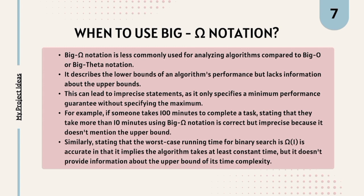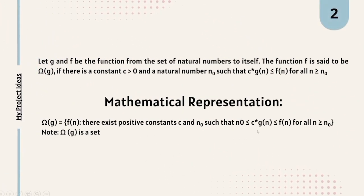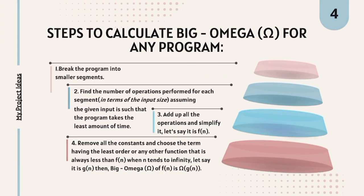Big Omega guarantees the minimum lower bound but does not specify the maximum. For example, if someone takes 100 minutes to complete a task, stating they take more than 10 minutes using Big Omega is technically correct, but imprecise because it does not mention the upper bound. You know at least 10 minutes are required, but you don't know the maximum time. Similarly, referring back to the mathematical representation: C times G of N lies between N0 and F of N for all N greater than N0 — it only specifies a lower bound and has nothing to do with the upper bound. That is why it is not commonly used.